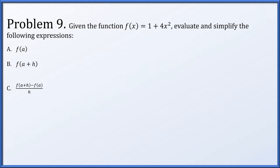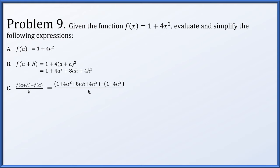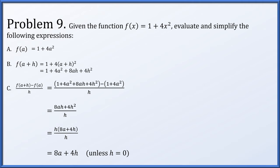For problem nine, given f(x) = 1 + 4x², we evaluate f(a), f(a + h), and [f(a + h) - f(a)] / h. f(a) = 1 + 4a². f(a + h) = 1 + 4(a + h)², which we expand. In the difference quotient, the 1s cancel and the 4a² terms cancel, leaving (8ah + 4h²) / h. Factoring h from the numerator and canceling (provided h ≠ 0) gives the final result of 8a + 4h.